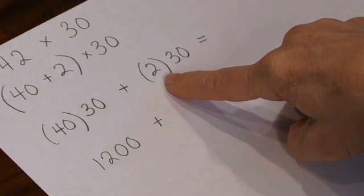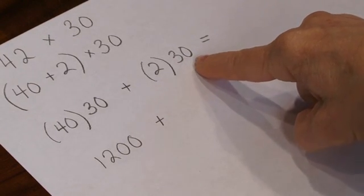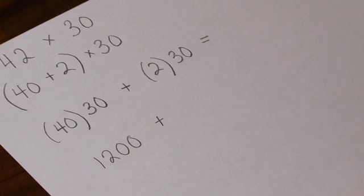2 taken 30 times is like 2 taken 3 times, which is 6, taken 10 times, or 60.